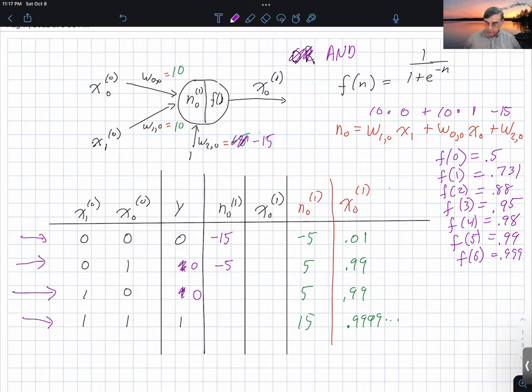For this row here, the relationship changes, the zero and one change places, but that still gives us a negative five as the net input. And then finally, when both of the inputs are one, we have 20 minus 15, which gives us a positive five.